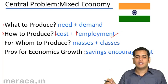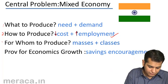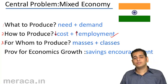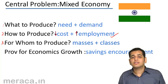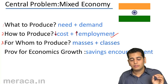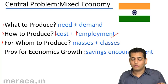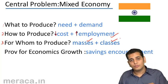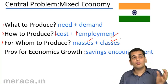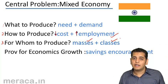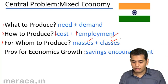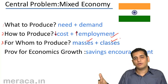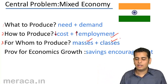This combination of least-cost techniques and high employment-generation techniques solves the 'how to produce' problem. The third question — for whom to produce — is answered by producing for all: the masses as well as the classes. The government produces goods required by society, while entrepreneurs produce goods required by the higher class.